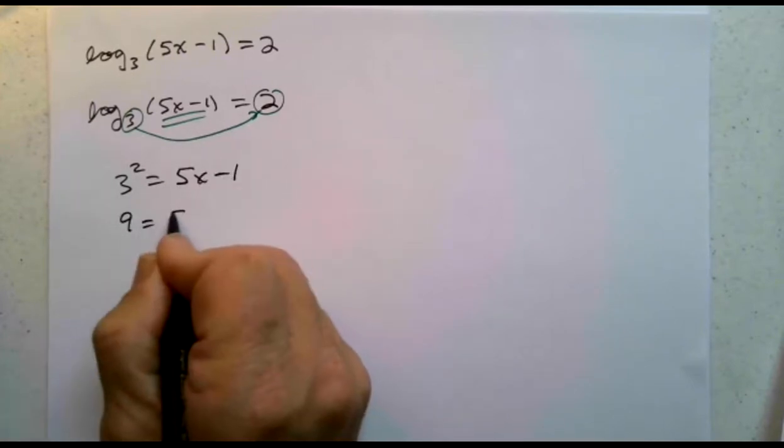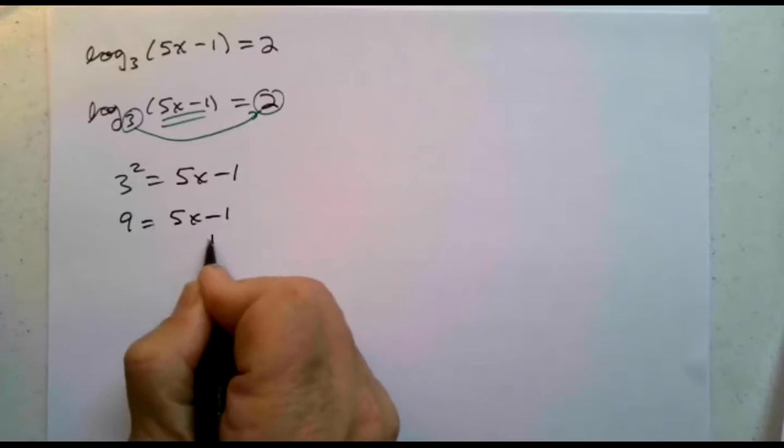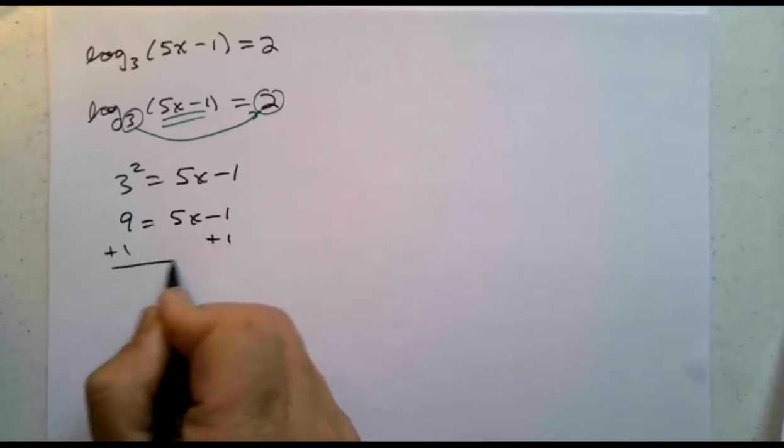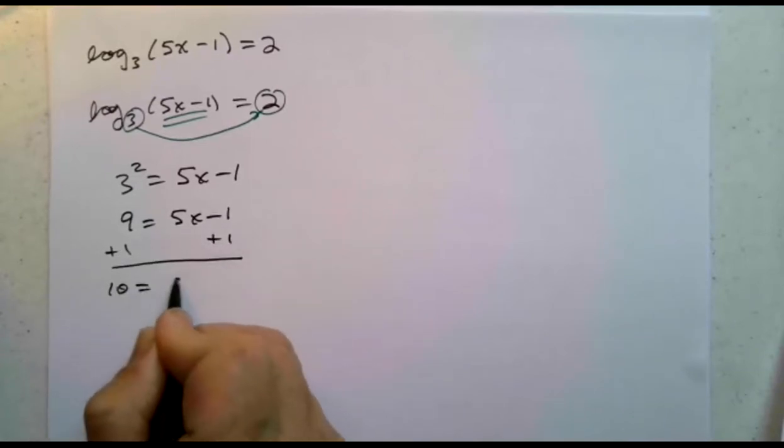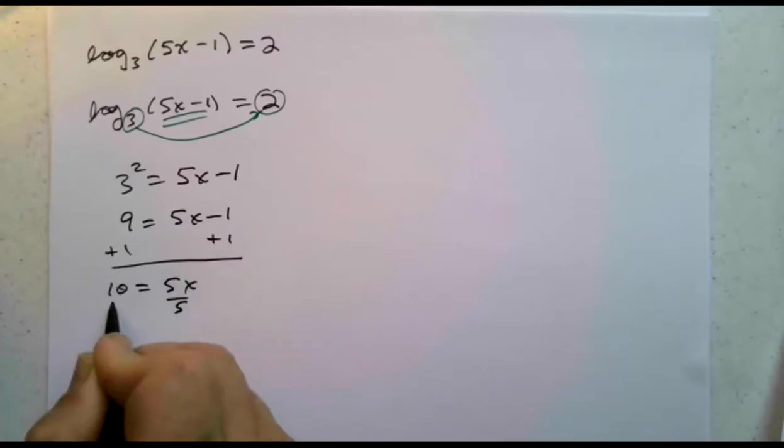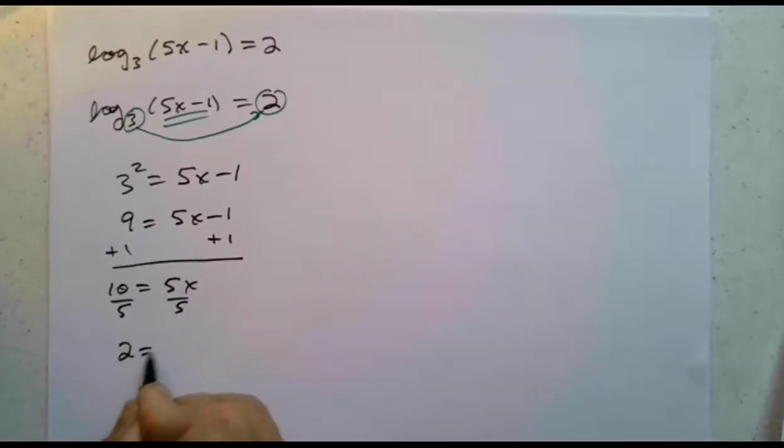Solving for x, 9 equals 5x minus 1. Adding 1 to both sides, 10 equals 5x. Divided by 5, we get 2 is x.